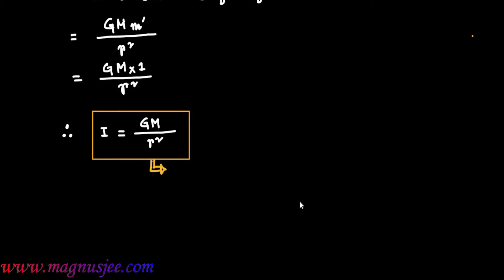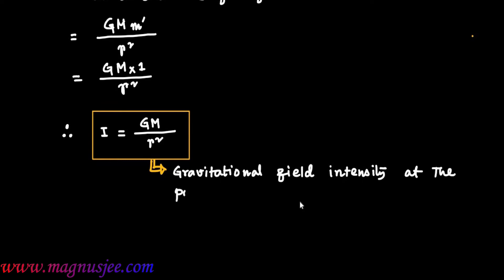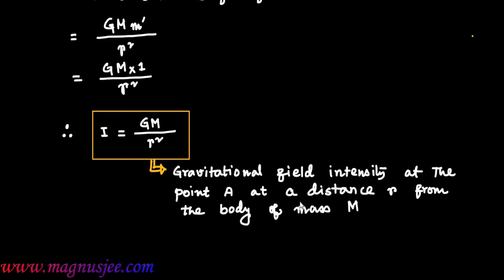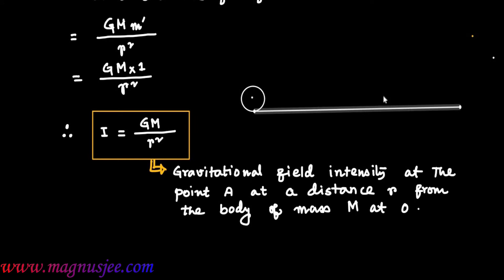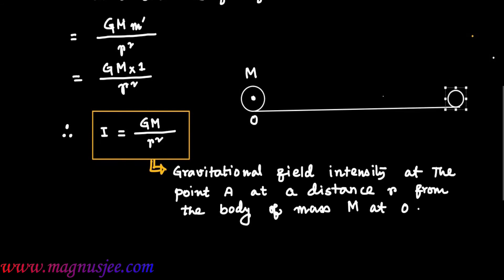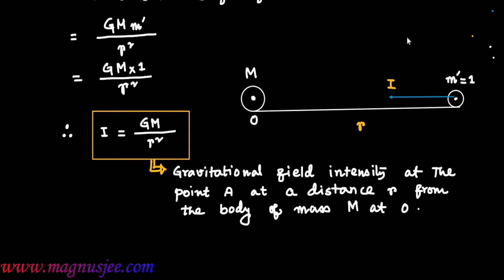Therefore I = GM / R². At O we have a body of mass capital M, and we consider a test body of mass M' equal to 1 at point A. This body of unit mass experiences gravitational pull which is denoted by I.